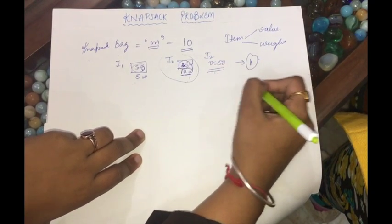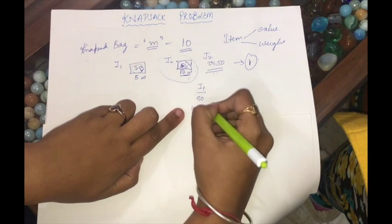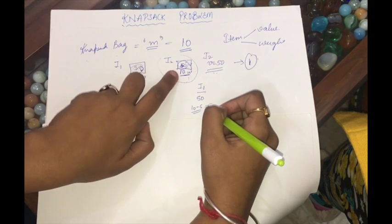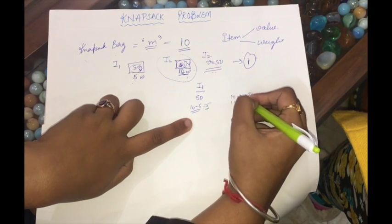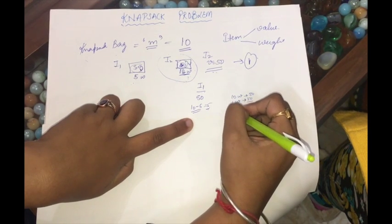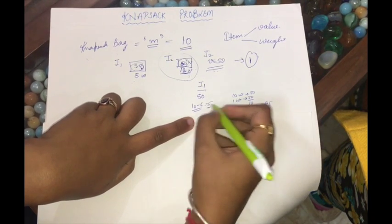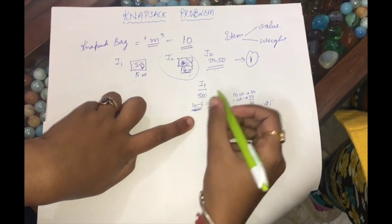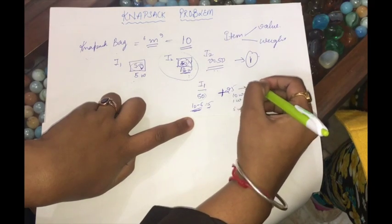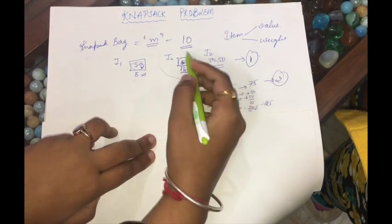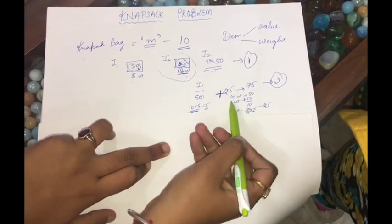The second solution is to choose item 1 first: I get a value of 50 and the remaining weight is 10 minus 5 equals 5. I can then add a fraction of item 2 — 5 out of 10 weights, giving a value of 50/10 × 5 = 25. So item 1 gives 50 and the fraction of item 2 gives 25, making my total profit 75. This solution is better because it maximizes profit within the capacity of 10.